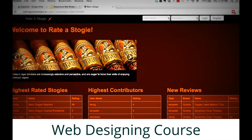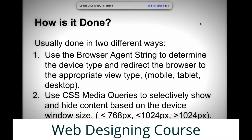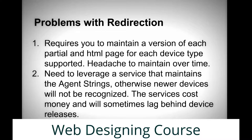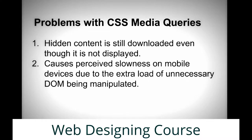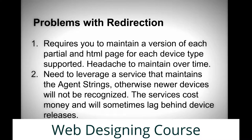The problem with this is that if you're on a mobile device with a screen smaller than 768 pixels, you're still pulling down all the images and content for the desktop site even though they're hidden in the background. That mobile device bogs down trying to manipulate all that hidden CSS and hidden web content, and it looks really slow because it's pulling down all these big images over your 3G or 4G network. So that's not really a good solution.